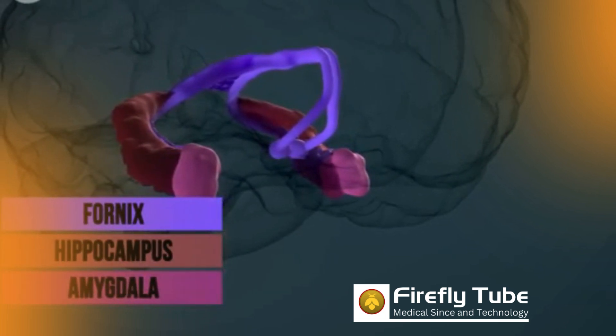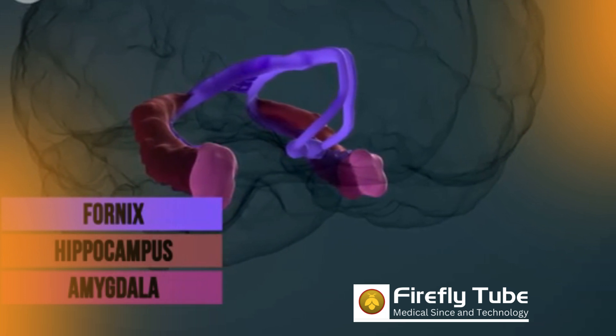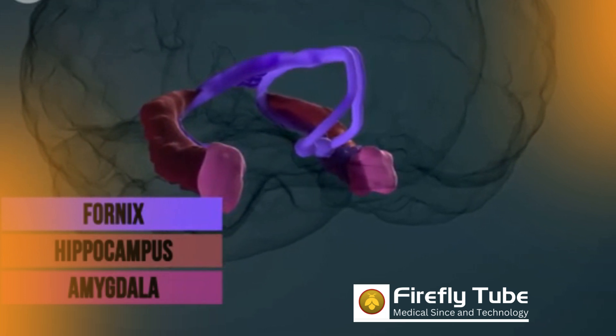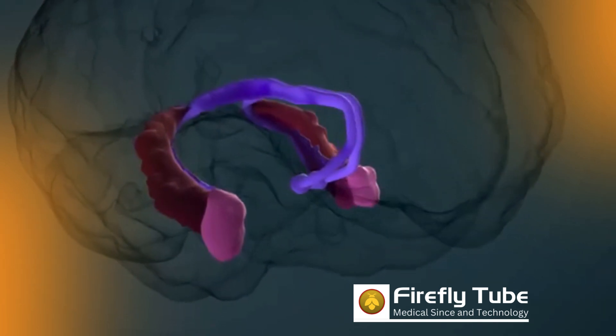The limbic system lies deep in the cerebrum and consists of the hippocampus, the amygdala, and the fornix with the mammillary bodies at the front end. The hippocampus is responsible for memory formation.